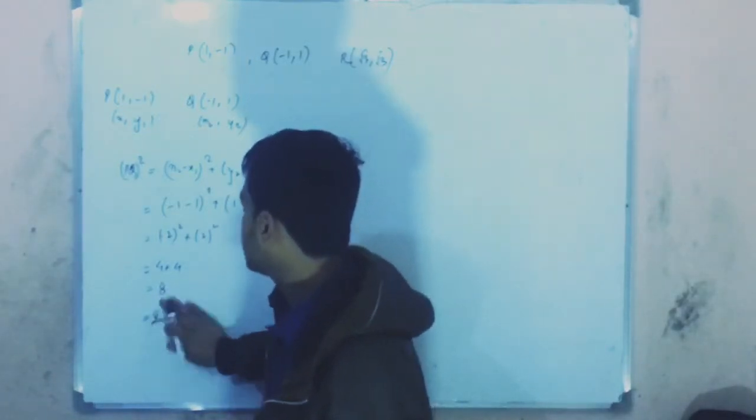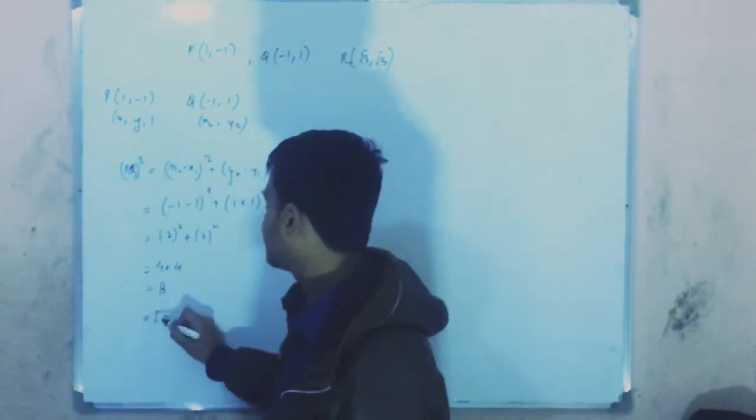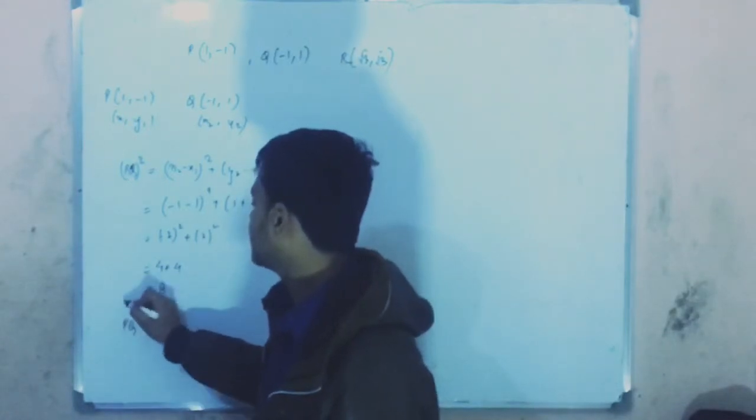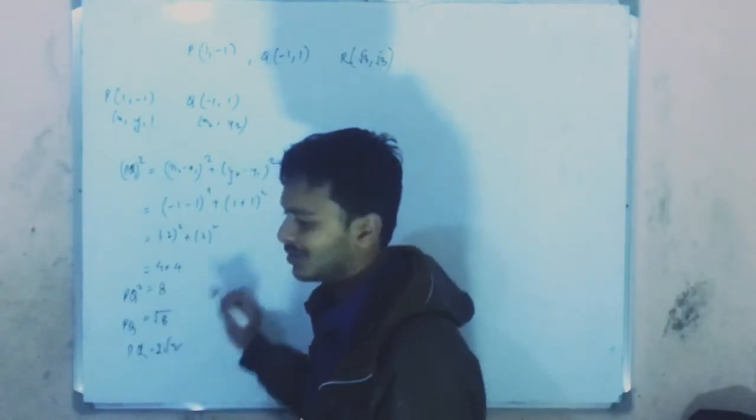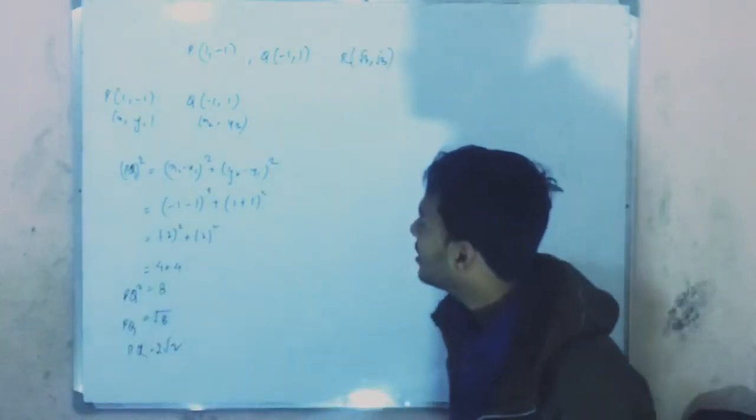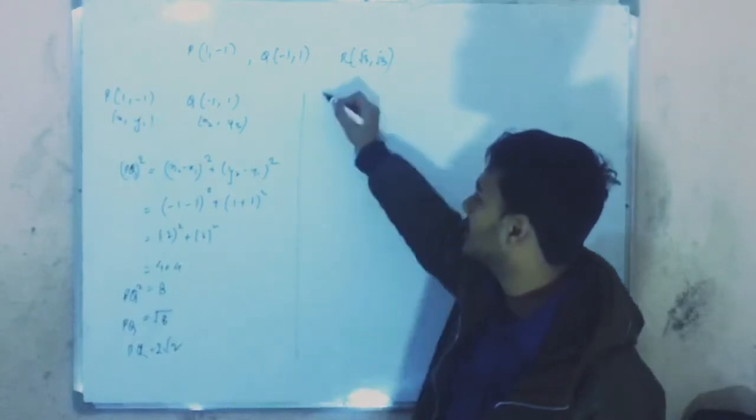So PQ squared equals 4 plus 4 equals 8. Therefore PQ equals 2 root 2. Now for the next question, we'll find QR.